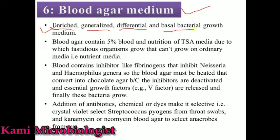Moreover, it is also a basal bacterial growth medium because the agar provides support for bacteria, allowing colonies to easily grow. This media contains 5% blood added after sterilization — 5% mammalian blood — and also contains tryptic soy agar ingredients. Due to the presence of these two materials, this media provides growth support for fastidious organisms, which are those that need special types of nutrients for their growth not provided by regular nutrient media.